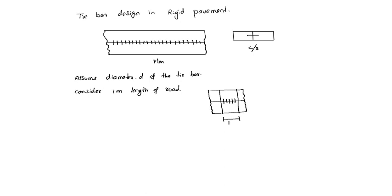The resisting force equals the frictional force. The frictional force is calculated by taking the volume of the pavement section: B into 1 into H, where B is the width of the pavement and H is the thickness. Volume multiplied by gamma of concrete gives the weight, and multiplied by F gives the maximum frictional force.